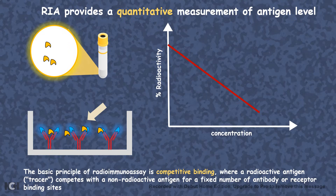Radioimmunoassay relies on the principle of competitive binding, where a radioactive antigen — this is a tracer — would actually compete with a non-radioactive antigen to bind to this particular antibody.